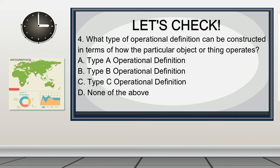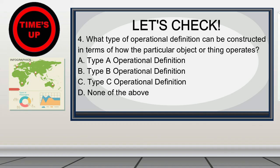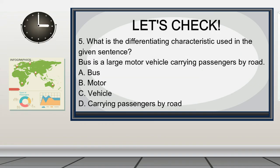Question 4: What type of operational definition can be constructed in terms of how the particular object or thing operates? A. Type A operational definition. B. Type B operational definition. C. Type C operational definition. D. None of the above. Question 5: What is the differentiating characteristic used in the given sentence? 'Bus is a large motor vehicle carrying passengers by road.' A. Bus. B. Motor. C. Vehicle. D. Carrying passengers by road.